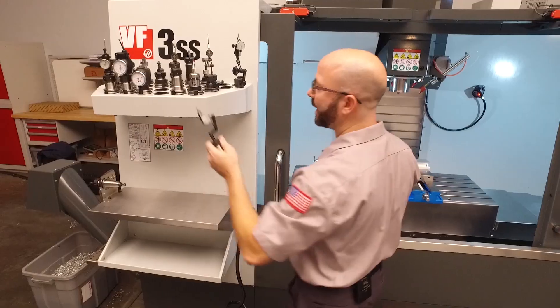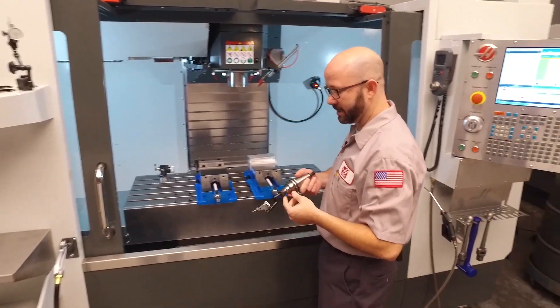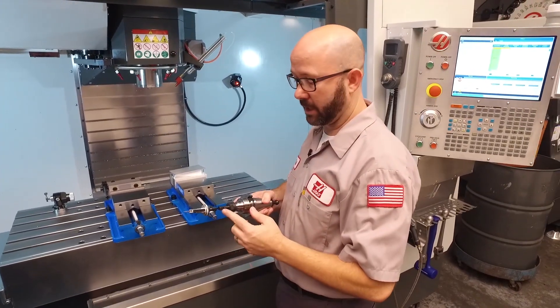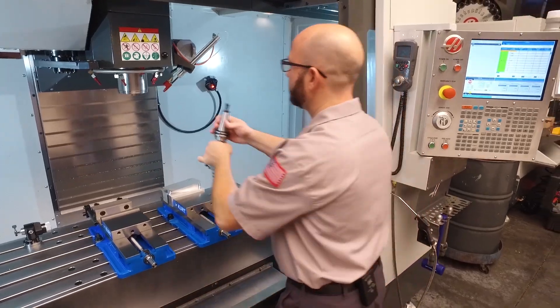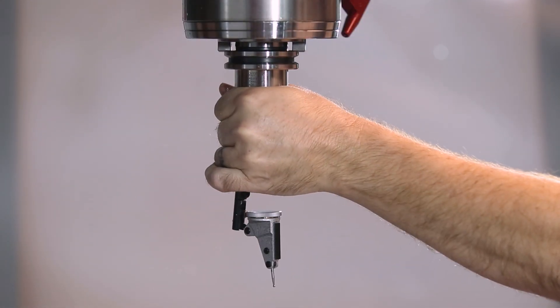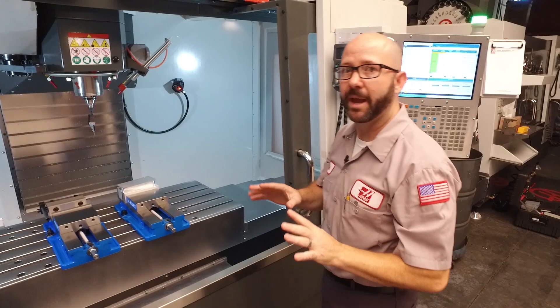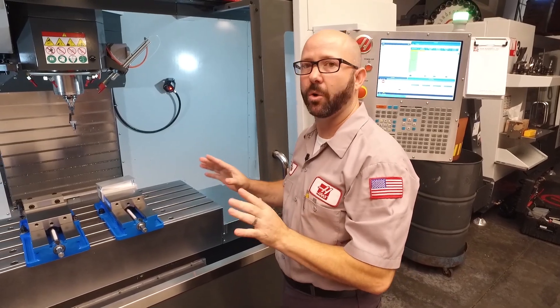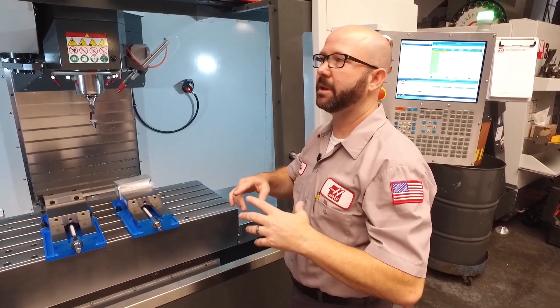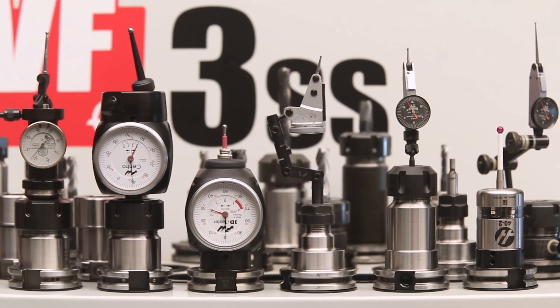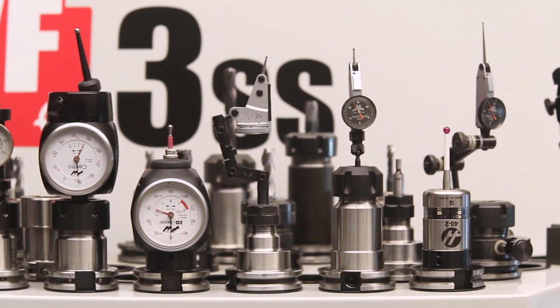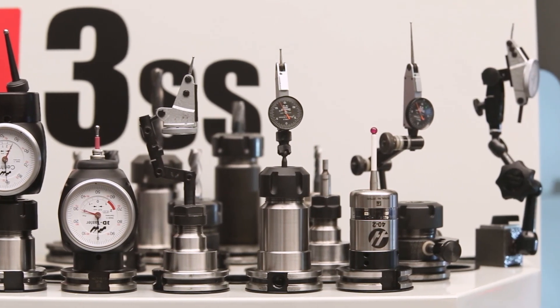So to pick up this hole, I'm gonna go ahead and grab one of these indicators, and I choose this guy. This is a nice vertical indicator with an axial support. Basically, the principles for picking up this hole with this indicator can be followed for using all these other indicators. If you can follow what I'm doing right now, you'll be able to pick up any hole with any indicator.